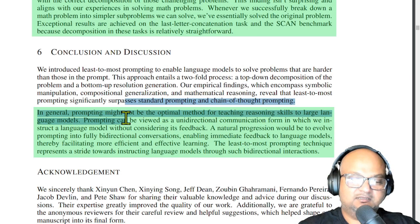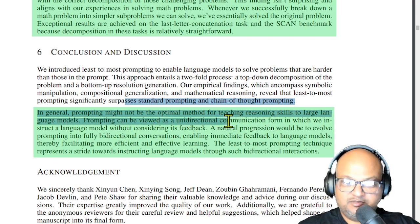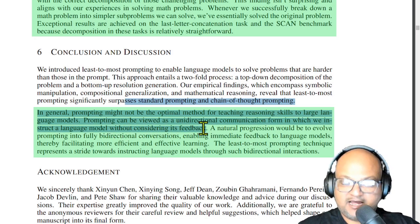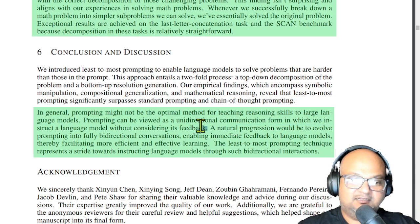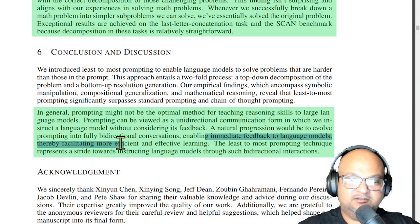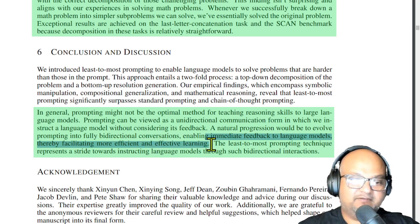They end with a really interesting thought, which is that currently prompting is unidirectional communication between the human and the LLM — we don't really consider the feedback that the LLM gives us. They envision a future in which prompting is more bidirectional, where the feedback can go back into the language model and help solve problems more effectively.